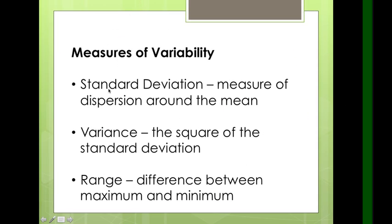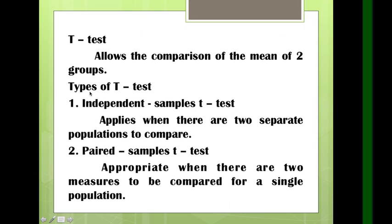For the measure of variability, we have standard deviation — measures of dispersion around the mean. Variance is the square of the standard deviation, and range is the difference between the maximum and minimum value. The most commonly used is standard deviation, because it shows the spread or dispersion of scores — the distance of each score around the mean. In descriptive research, we use the mean and standard deviation. We also use frequency to count numbers and percentage to represent the count.